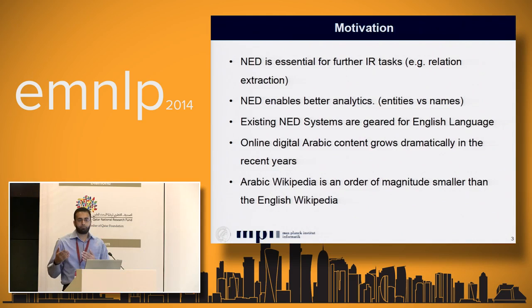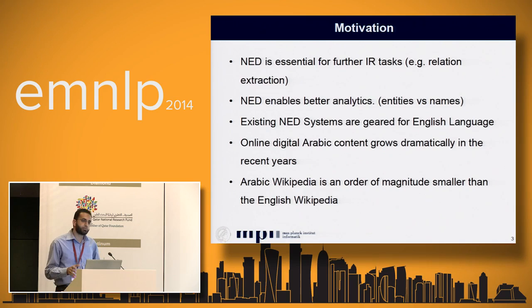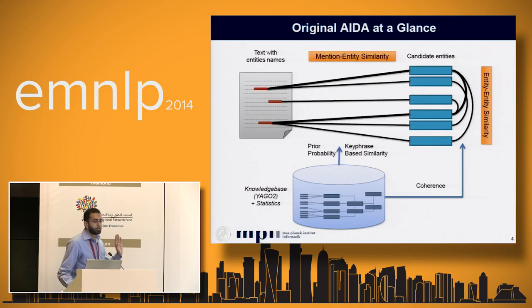Furthermore, the existing NED systems — this is not a novel problem, it has been discussed in the literature for decades — are all geared for English. We'll see what the missing components are for Arabic. Arabic content is very relevant for this workshop, it's growing recently, and Arabic Wikipedia is way smaller than the English one. Most NED systems are based on Wikipedia, so we adopted the AIDA system, an open-source NED framework produced in-house at Max Planck Institute, and adapted it for Arabic text — hence the name AIDA Arabic.